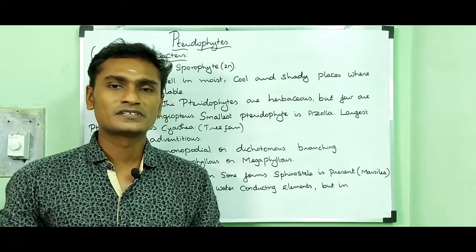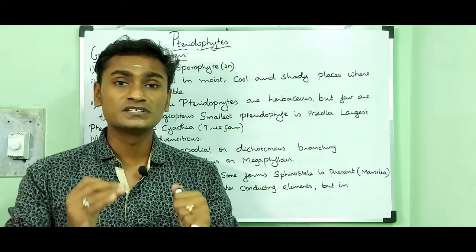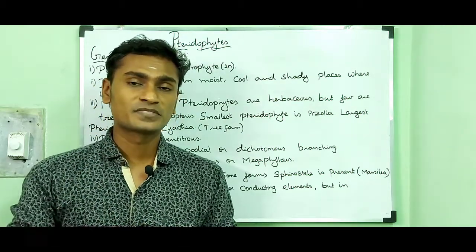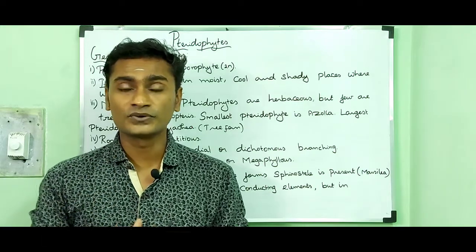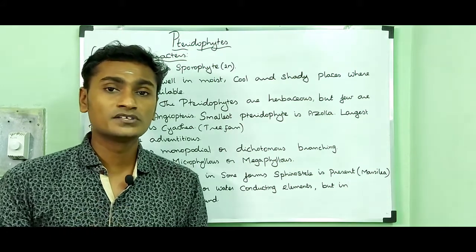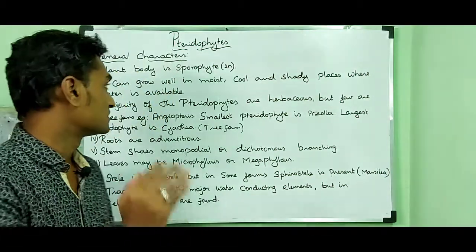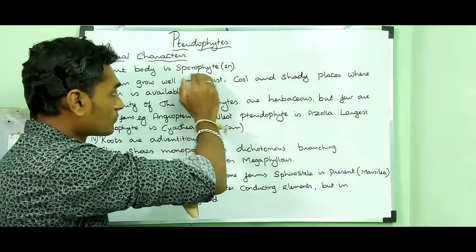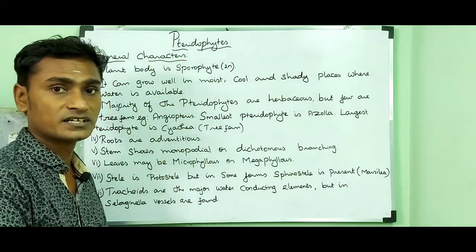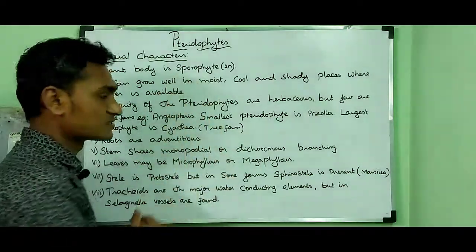Now let us talk about the general characteristic features of pteridophytes. The plant body of the pteridophyte is called the sporophyte, and they are diploid in nature — containing two sets of chromosomes. The dominant phase of pteridophytes is the sporophytic phase, while in bryophytes, the dominant phase is the gametophytic phase.